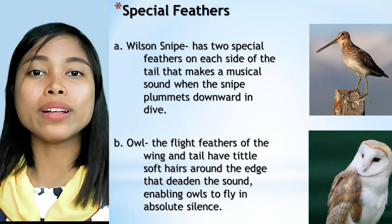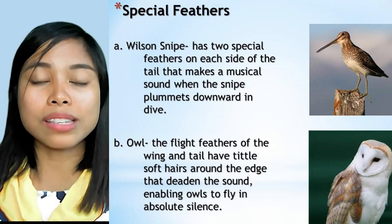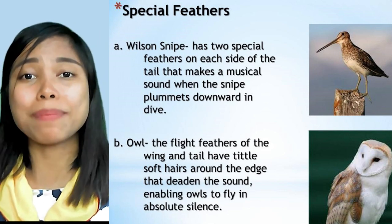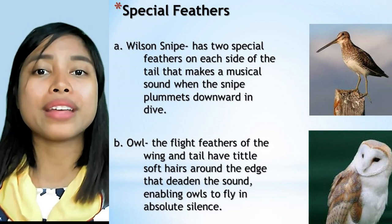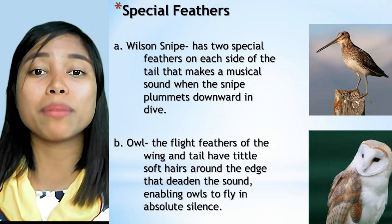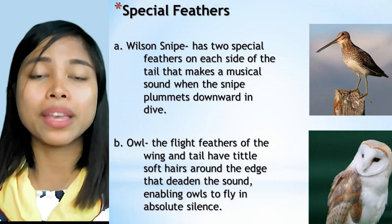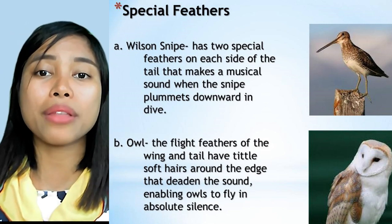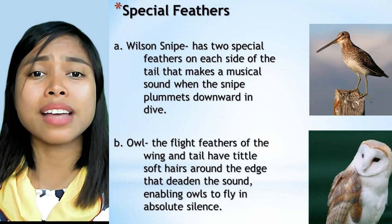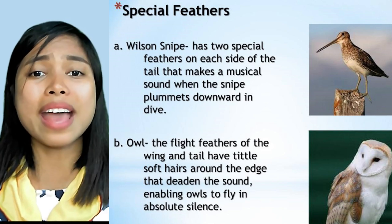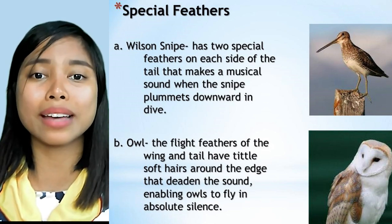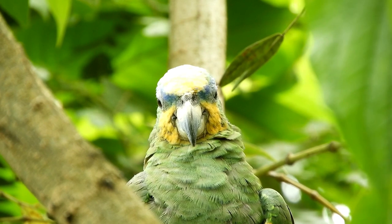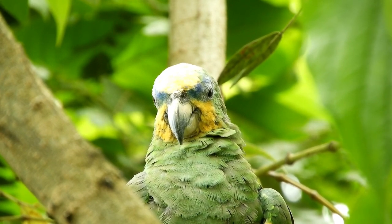Some birds have special feathers. The Wilson's snipe has two special feathers on each side of the tail that make a musical sound when the snipe plummets downward in a dive. The owl's wing and tail feathers have tiny soft hairs around the edge that deaden sound, enabling owls to fly in absolute silence. All birds shed their feathers once a year — if they should lose more from one side than the other, they would be unable to fly.